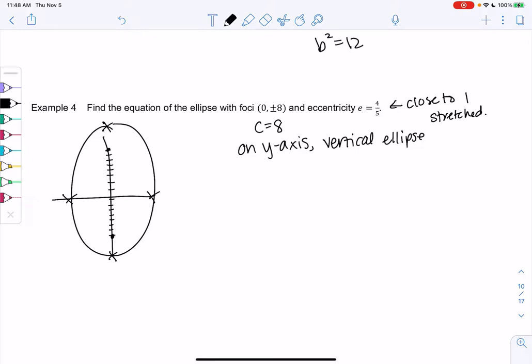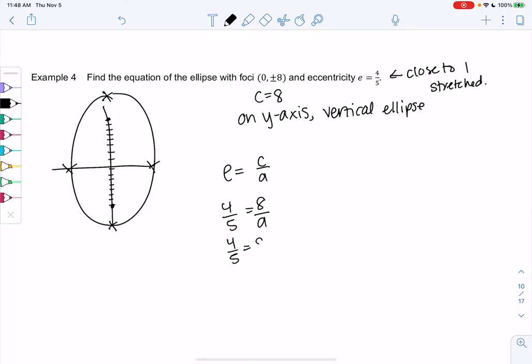We learned that e is equal to c over a. And so we know c and we know e, so we could figure out what a is. So 4/5 is equal to 8 over a. So maybe you can just do quick proportions in your head. 8/10 would be the same as 4/5, so a is equal to 10. So that tells me that this was actually going out to (0, 10). The vertices were at (0, 10) and (0, -10). Not that that matters, but it's nice to kind of check out the graph.